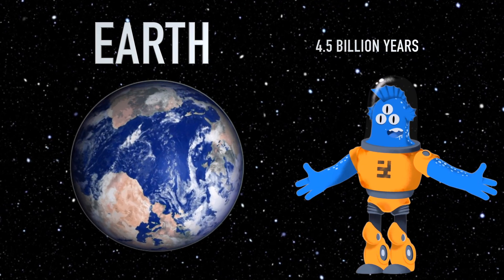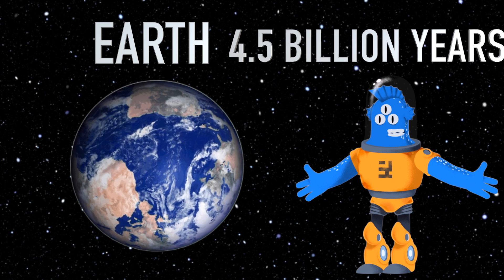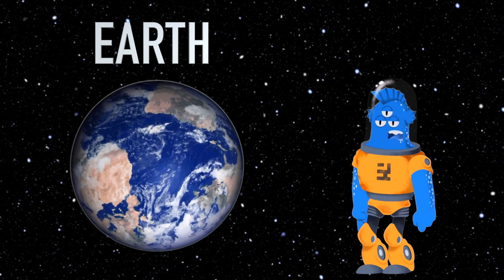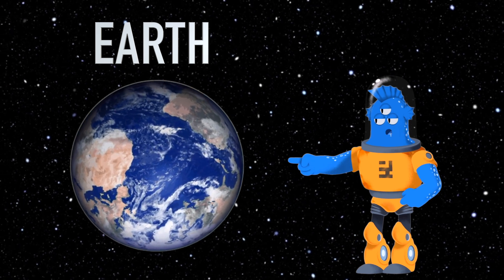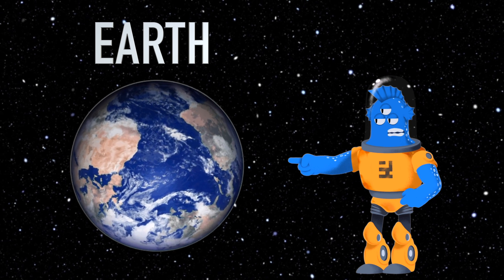Earth has been around for about 4.5 billion years, and it's constantly changing. Mountains rise, rivers change course, and continents drift over time.